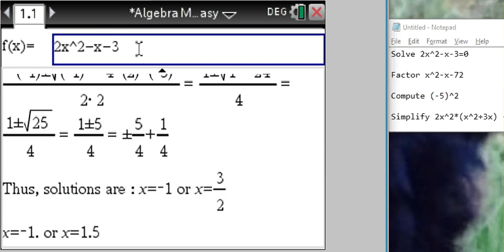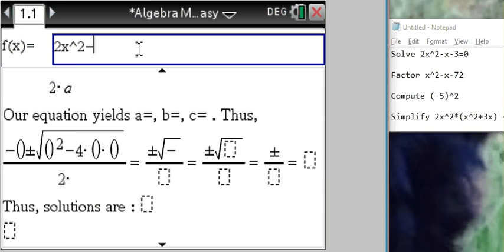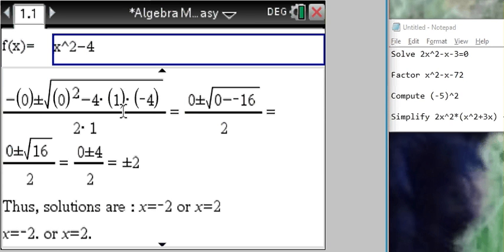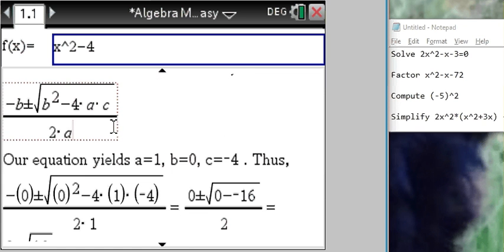That's how it goes step by step, works for any quadratic equation. x² minus 4, as we all know, has solutions plus and minus 2. We can still do the quadratic equation here.